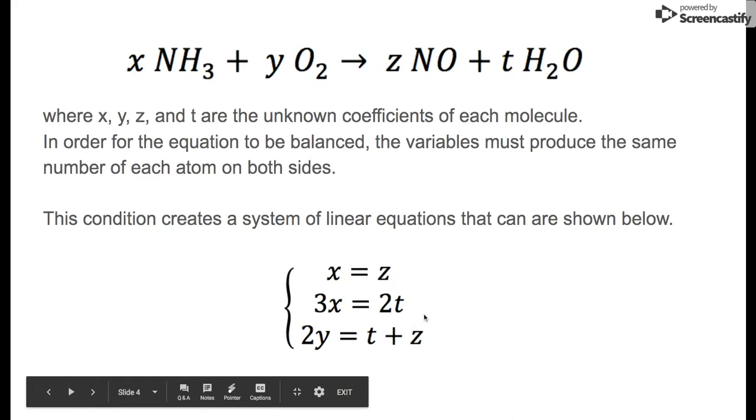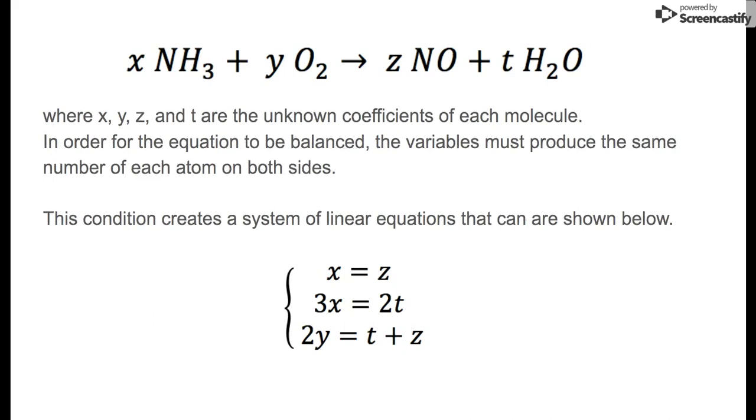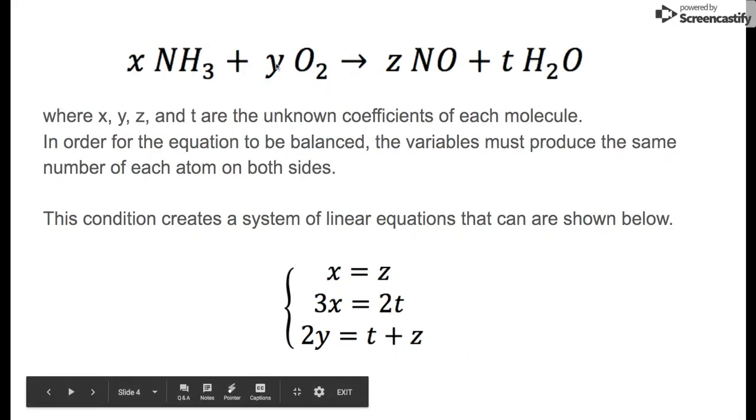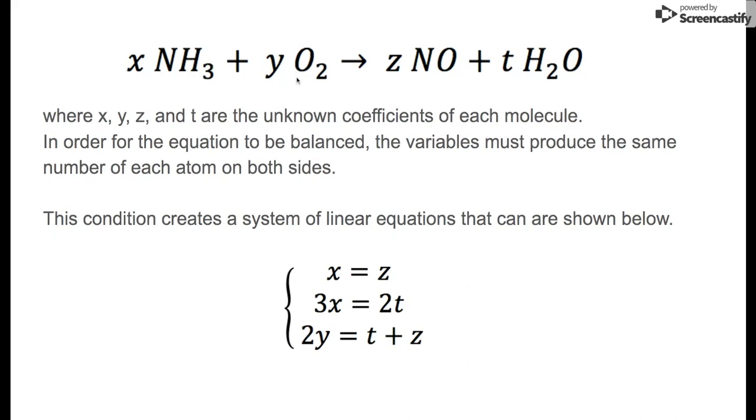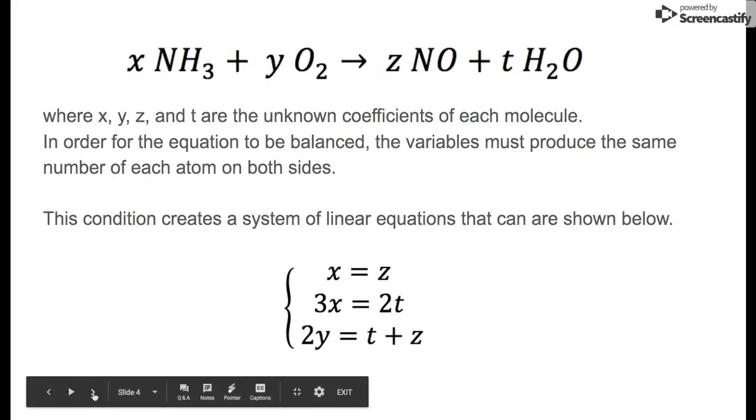So 3x must equal 2t. For our third equation, let's look at the coefficients of oxygen. y times 2 gives us the number of atoms on the left, and this must equal z plus t. There we go—we have three linear equations that we're going to use linear algebra to solve.